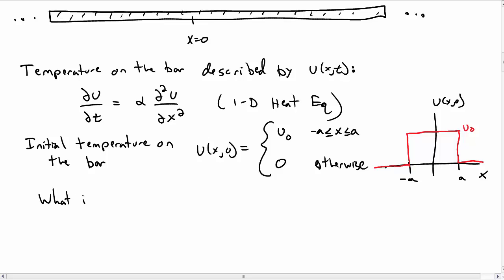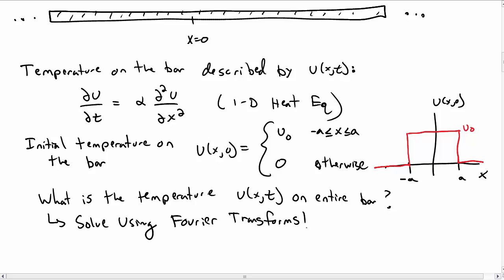So what we want to know in this problem is what is the temperature on the entire bar, u of x and t, for all time. And so the way we're going to do this is we're going to solve this using Fourier transforms. So in the next video we'll see how to apply Fourier transforms to this differential equation to turn it into a problem that's much easier to solve.